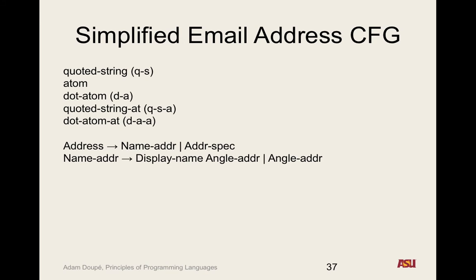The next rule is: name-address goes to either a display-name followed by an angle-address, or just an angle-address. A name-address is some string beforehand where the email address is in brackets — like in Gmail where you see someone's name in double quotes followed by angle brackets with the actual email address.